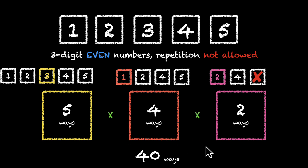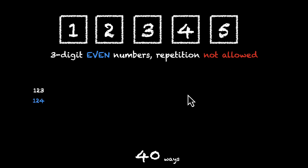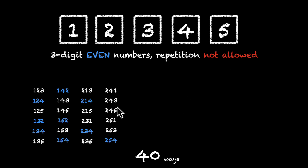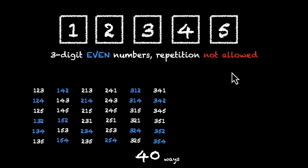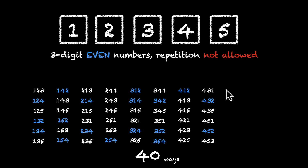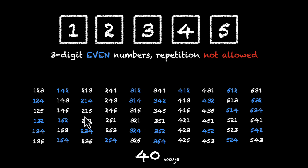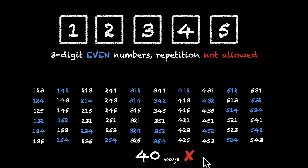Let's take a look at these 40 even numbers. Here's the list of all 3-digit numbers where digits are not allowed to repeat, and the blue ones are all the even numbers. Wait — I don't see 40 of them; there seem to be fewer than 40. I think we've made a mistake somewhere, so let's go back and try this one again.